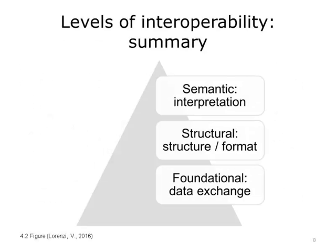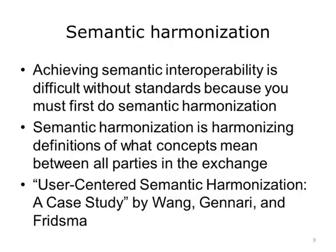This diagram summarizes the three levels of interoperability and each of their primary characteristics. Foundational interoperability is about data exchange in its basic form. Structural interoperability is about the structure and format of the data, so that data could be interpreted. Semantic interoperability is the ability for systems to interpret data that are exchanged, and it is the highest level of interoperability.